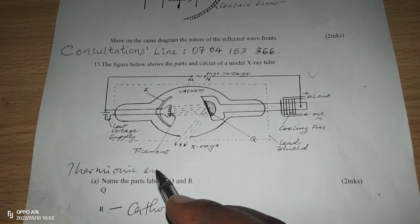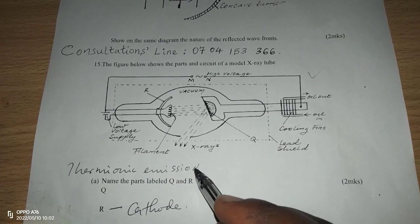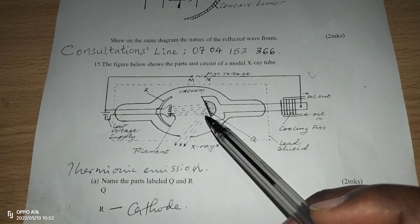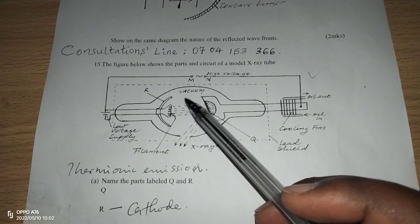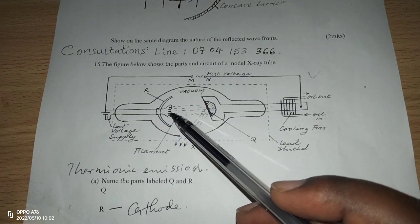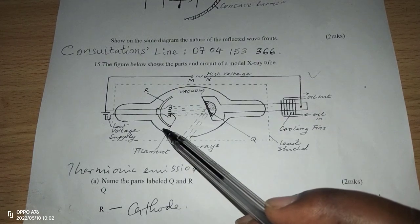Thermionic emission is the dislodging of electrons from a metal surface due to heat. When thermal heat is supplied by the current in the heater filament, we have electrons dislodged from the surface of the cathode.